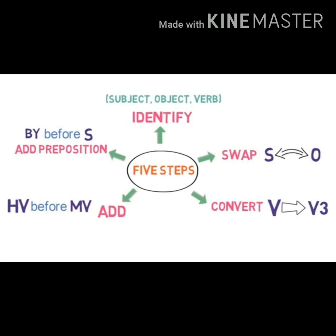Step four: add the proper helping verb of 'to be' before the main verb. The 'to be' forms are: is, am, are, was, were. 'Be' is the first form, 'was' is the second form, and 'being' is the third form. Step five: add the preposition 'by' before the object — meaning the new object, which was earlier the subject of the sentence. These five steps will help us convert active voice into passive voice.